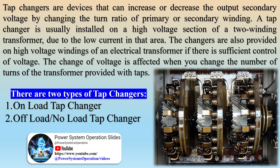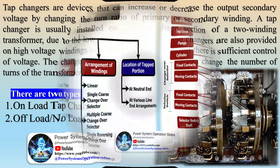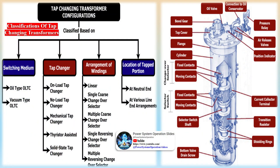Each tap adjusts the voltage by 0.625 percent until it reaches either a maximum of 10 percent above or 10 percent below rated voltage. The primary feature of an on-load tap changer is that during operation the main circuit of the switch should not be opened — no part of the switch should get short-circuited. Due to the expansion and interconnection of the power system, it becomes crucial to change the transformation taps numerous times every day.